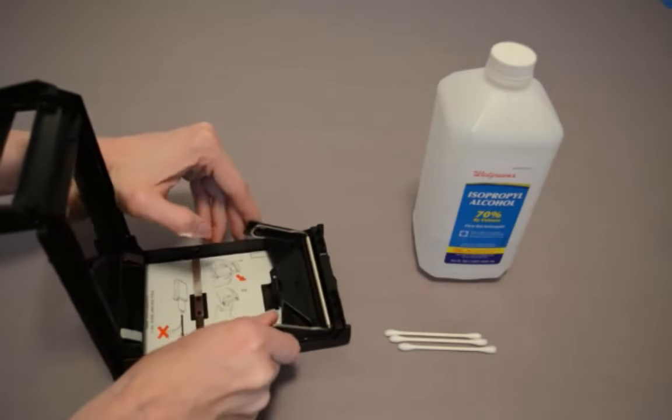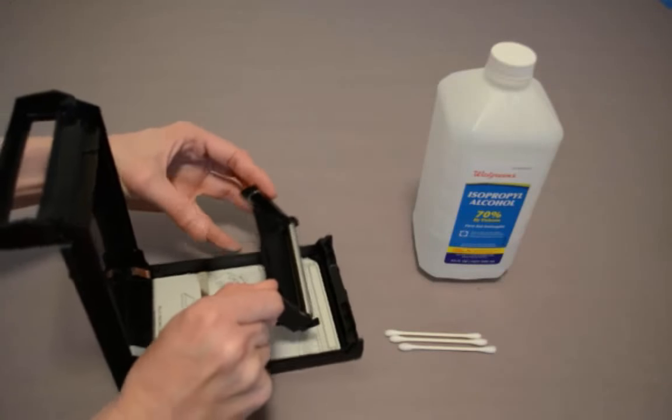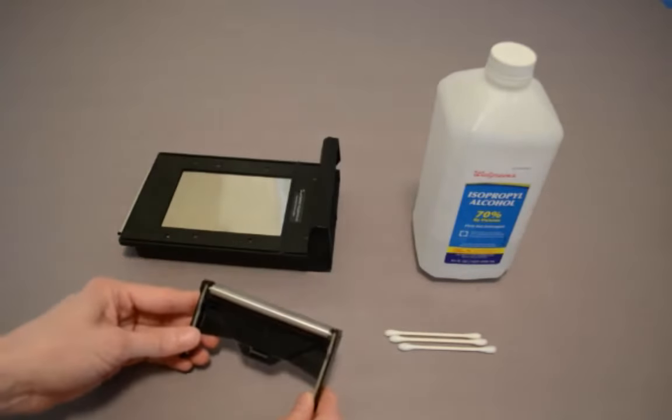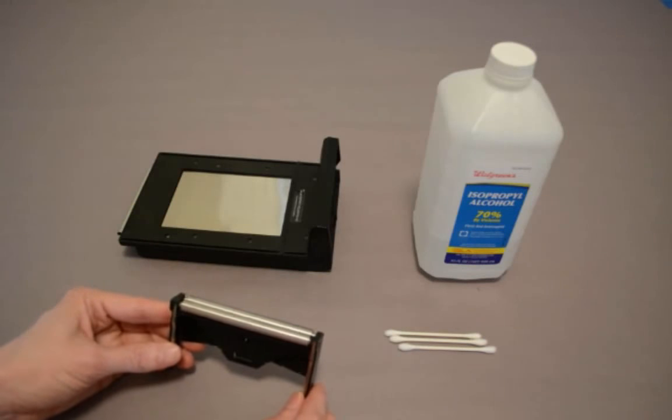You'll lift up gently on the side and then pull forward and you can remove the rollers. You can also try to clean it without removing it but this way is a little bit easier.